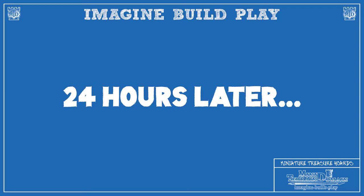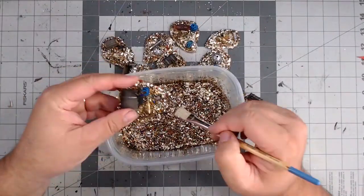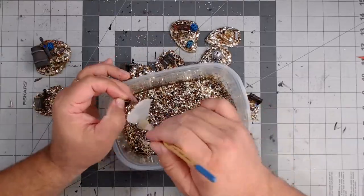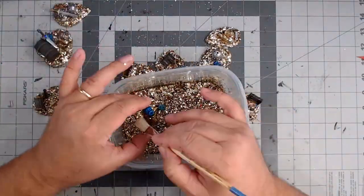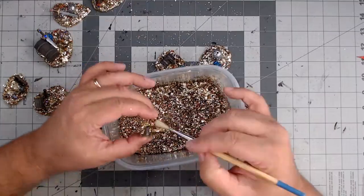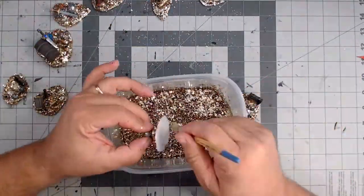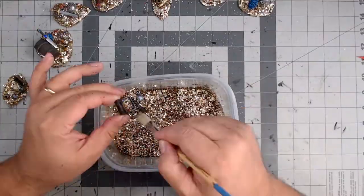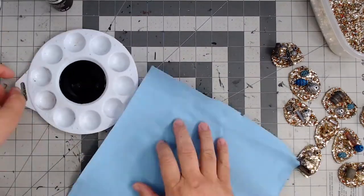Once it's dried, I take a stiff bristle brush across all the pieces and I'm just brushing away the excess glitter that did not adhere to the glue.